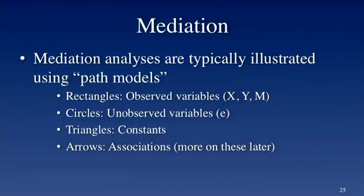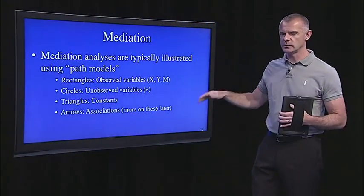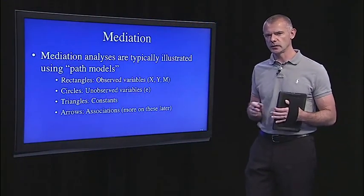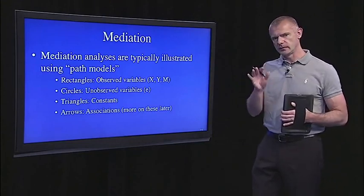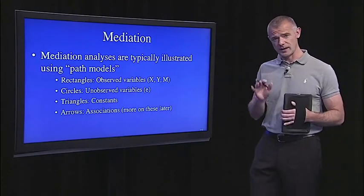Unobserved variables, our error terms, we can't observe them, they're unsystematic. Those are represented by circles. Constants are represented by triangles. And then, any association among variables will be represented with arrows. There are single-headed arrows or double-headed arrows, and that has something to say about causality or not.